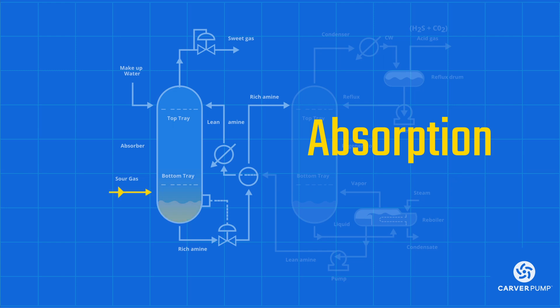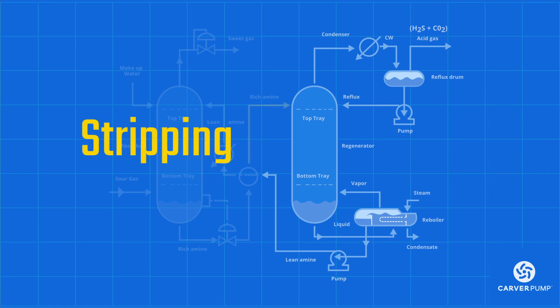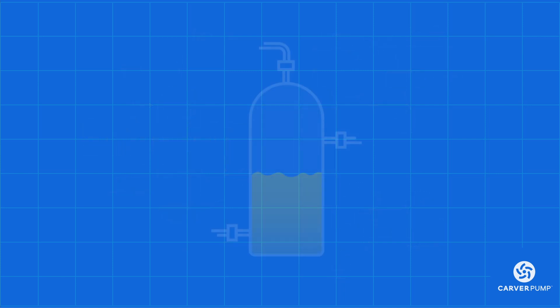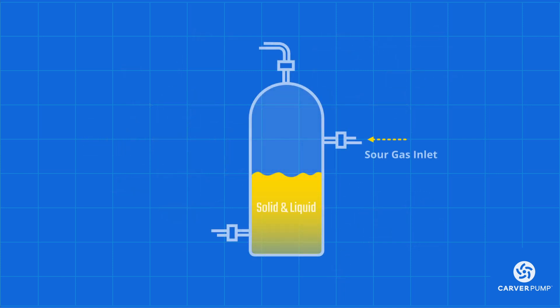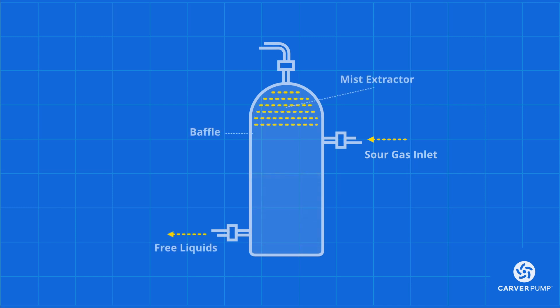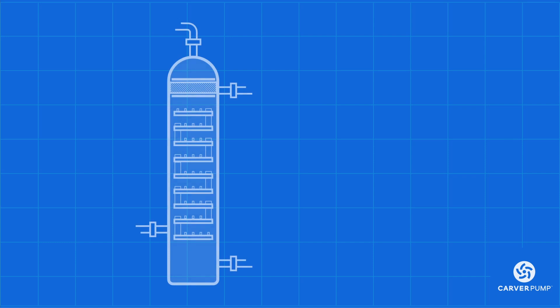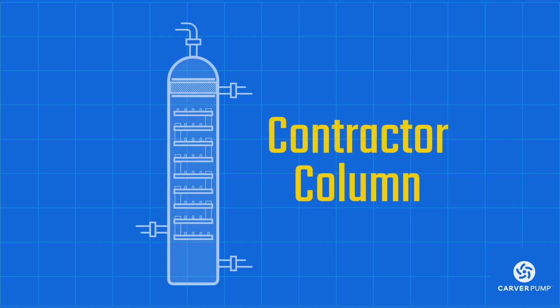The typical amine sweetening process contains two steps: absorption, where the amines absorb the H2S and CO2 from the sour gas, and stripping, where the H2S and CO2 are stripped from the amines and discharged. Absorption begins with the inlet separator, where any solids or liquids are removed from the sour gas using baffles and mist extractors.